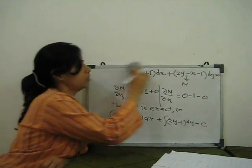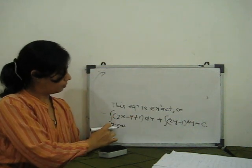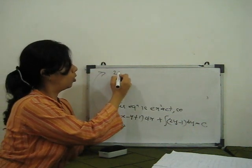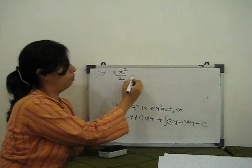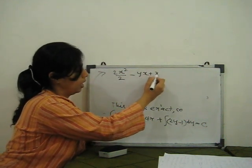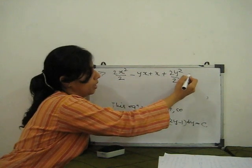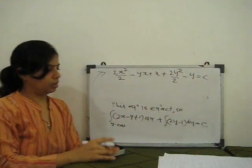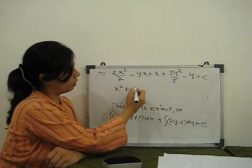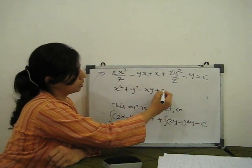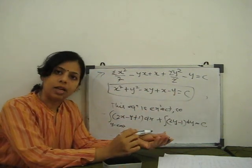Now we integrate. With y treated as constant: 2x integrates to x squared, minus yx, plus x. Then 2y integrates to 2y squared over 2, minus y. The 2's cancel, giving: x squared plus y squared minus xy plus x minus y equals c. That is the required general solution of the given differential equation.